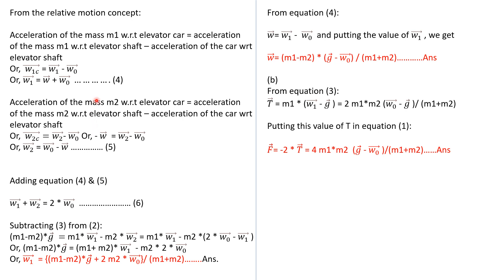In the same fashion applied to mass M2, we get equation 5: W2 equals W0 minus W. You can go through the write-up by yourself — it is for your convenience in understanding. Adding equations 4 and 5 gives: W1 plus W2 equals 2W0, all in vector form.